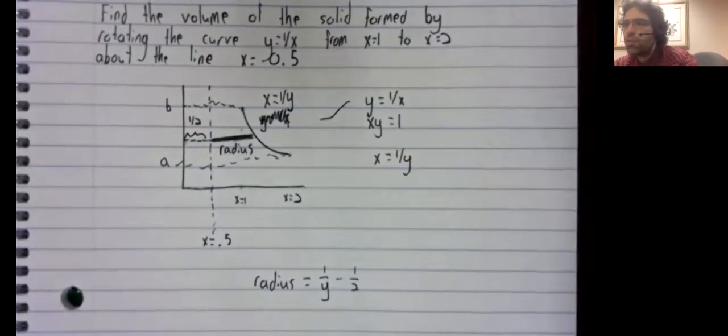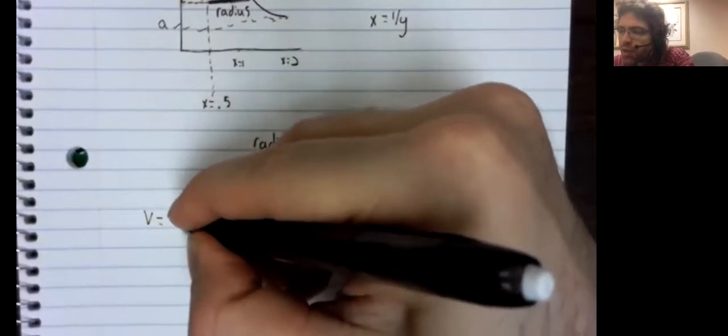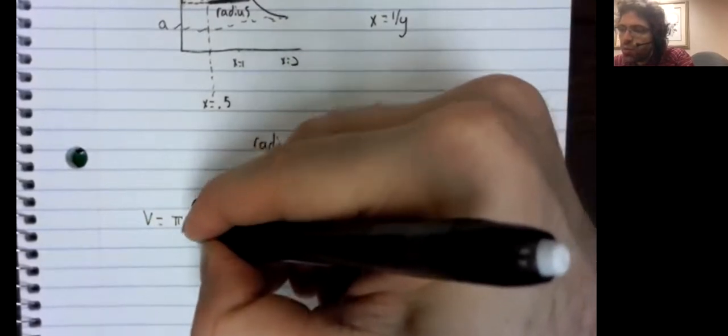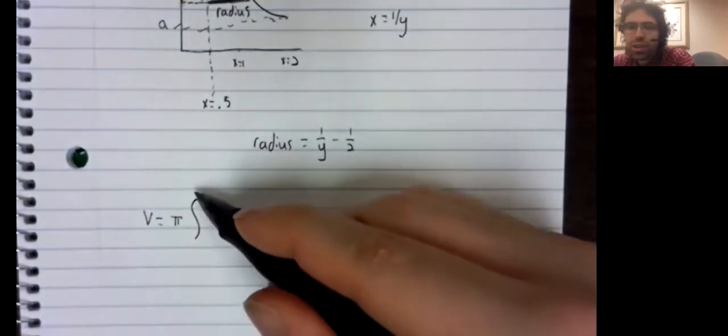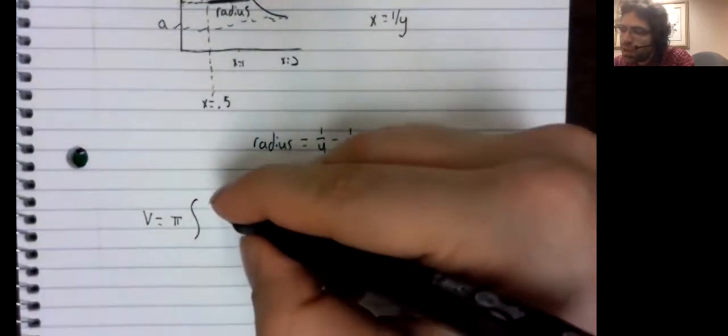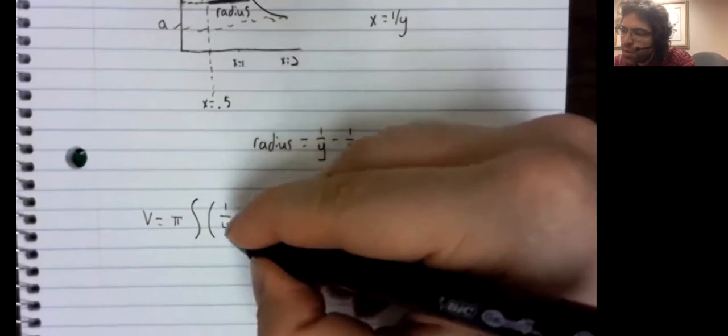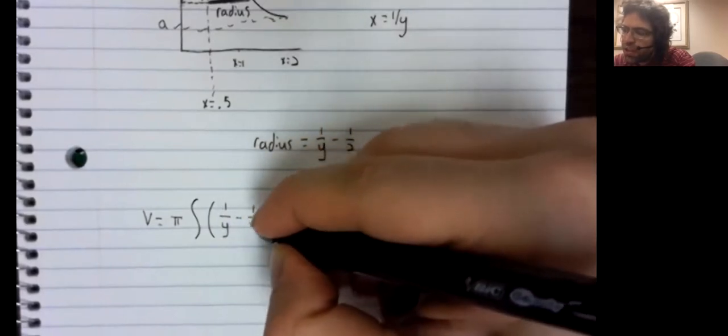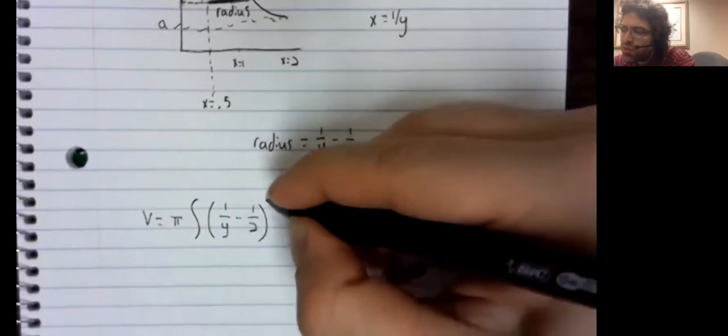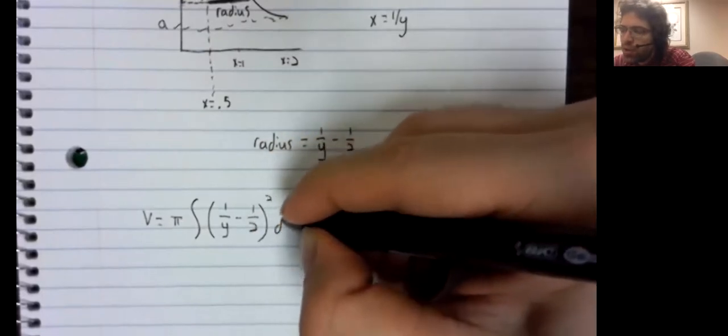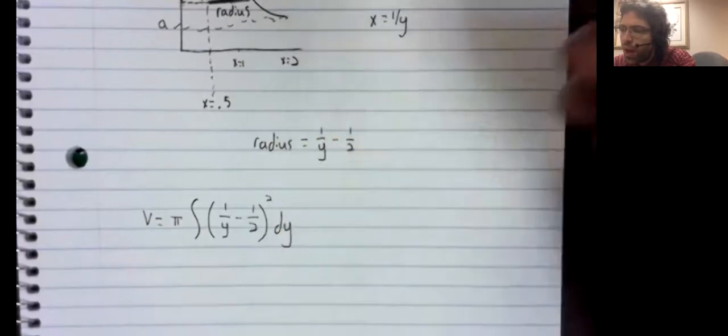So good, we are progressing. The volume is pi times the integral from something to something of the radius squared dy.